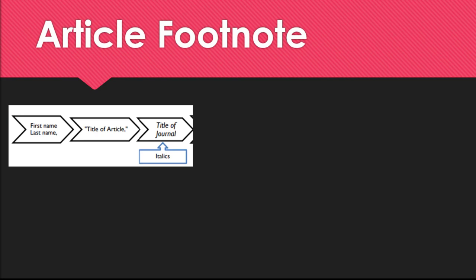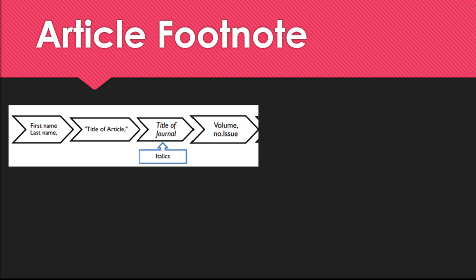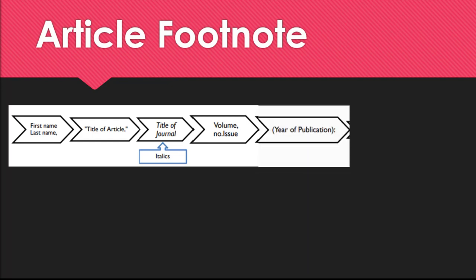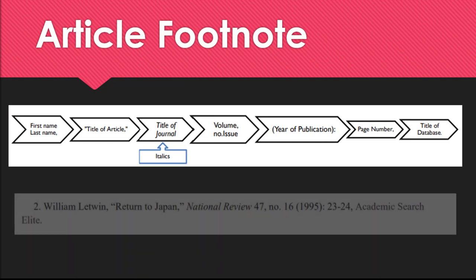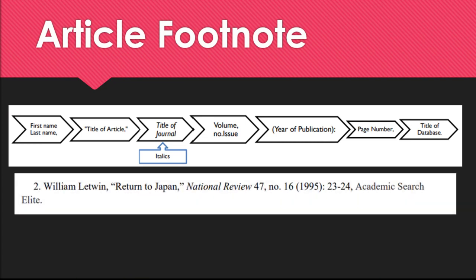For a journal article, here's what we include: the author's first and last name, the title of the article in quotation marks, the title of the journal in italics, the volume and issue number with 'no.' before the issue, the year of publication in parentheses, a colon, the page range of the article within the journal, and finally the database where you found the article. You would then end again with the page number that the information came from, making it easy for your reader to find that information themselves.